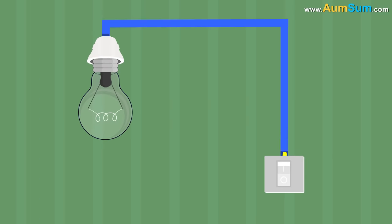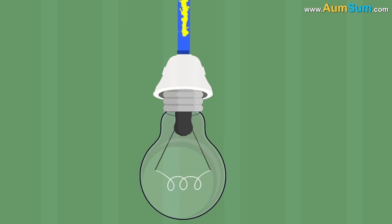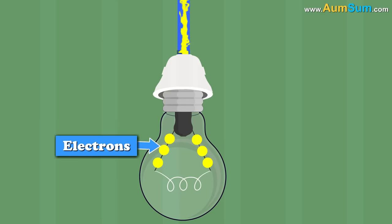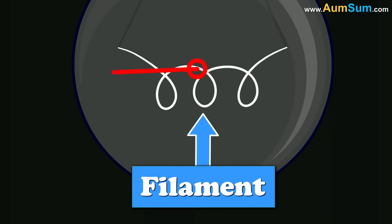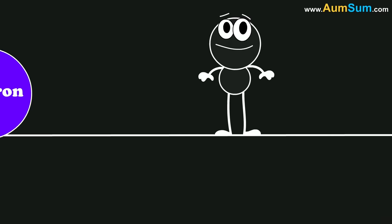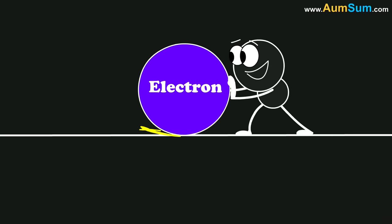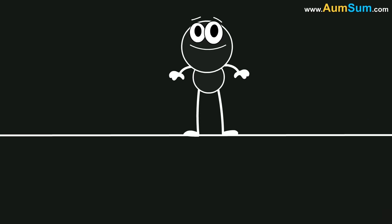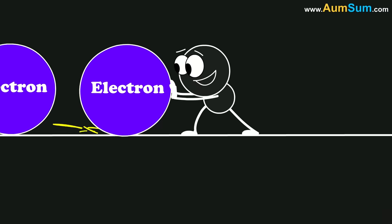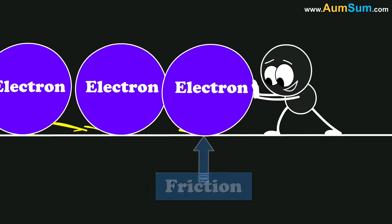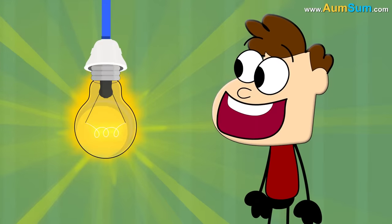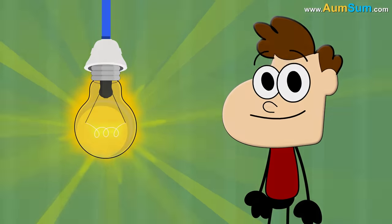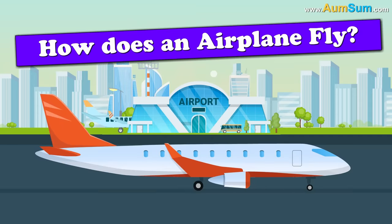When we switch on the bulb, electricity starts flowing. This electricity or the flow of electrons is hindered by the filament of the bulb. The filament is usually made of tungsten as it has a high melting point. A long and thin filament wire offers higher resistance to the flow of electrons. Now, this hindrance to the flow of electrons leads to the creation of friction which causes the filament to heat up and start glowing. So, this is how a light bulb glows.